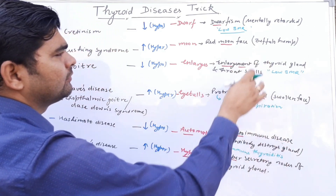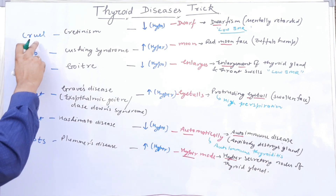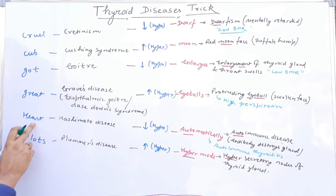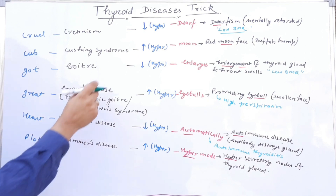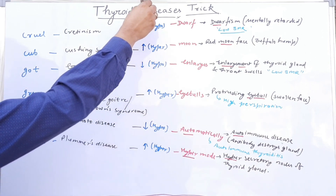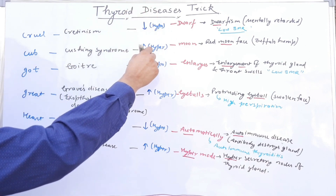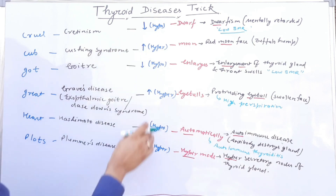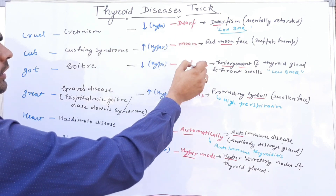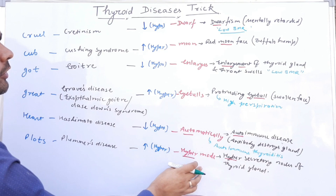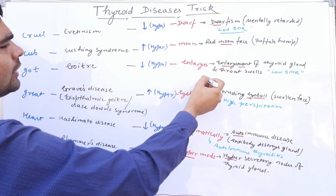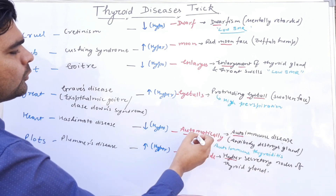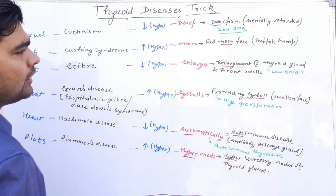To recap: Cruel = Cretinism, Cub = Cushing syndrome, God = Goiter, Great = Graves disease, Heart = Hashimoto, Plots = Plummer's disease. The hypo/hyper sequence alternates starting with hypo. And for characteristics: Dwarf = dwarfism, Moon = moon face, Enlarges = enlargement, Eyeballs = protruding eyeball, Automatically = autoimmune disease, Hyper mode = hyper secretory glands.